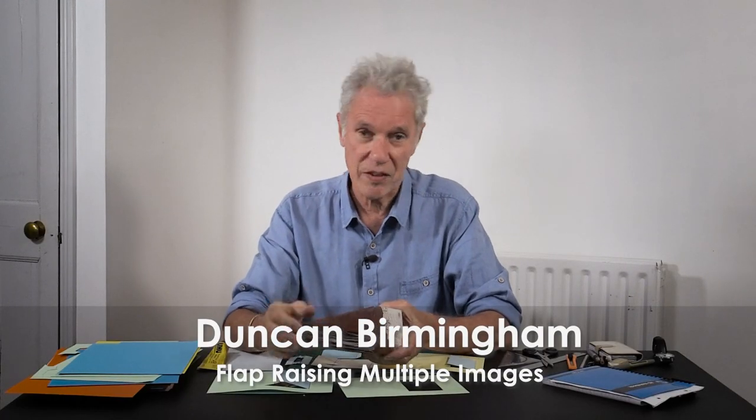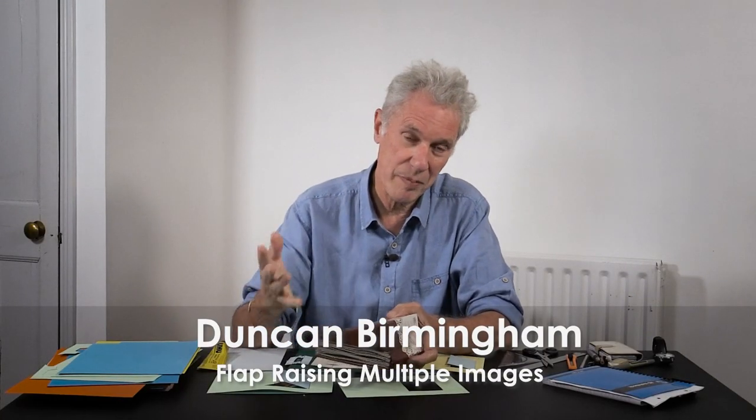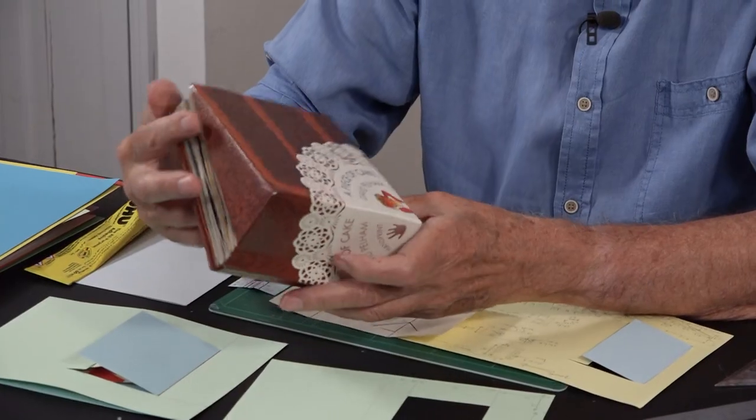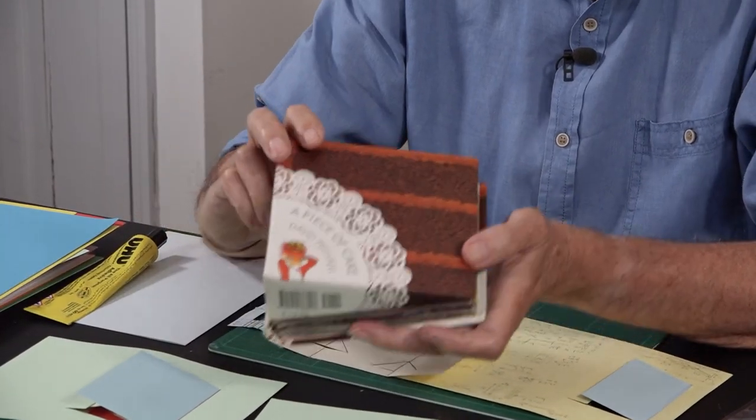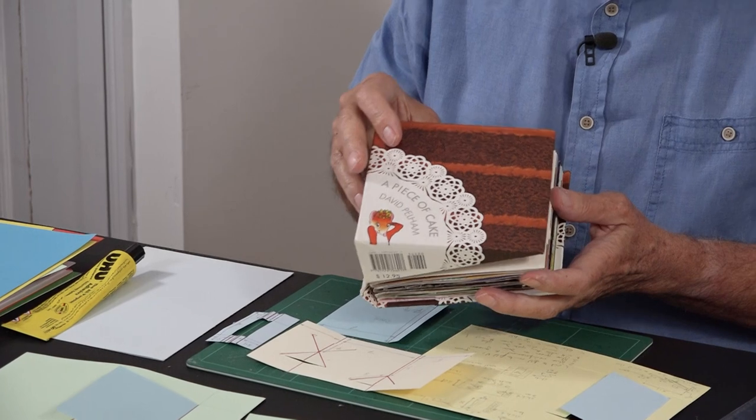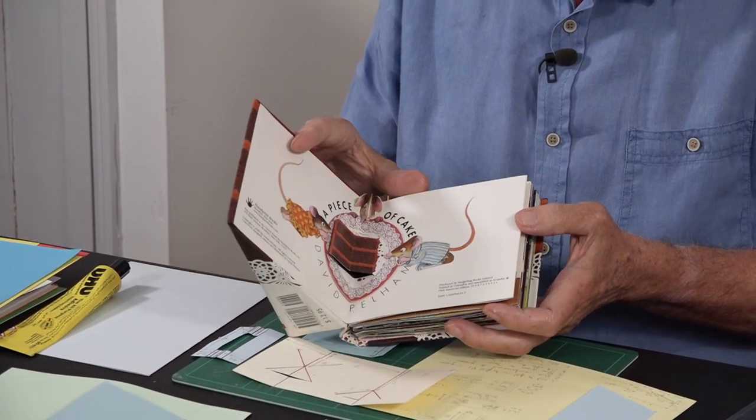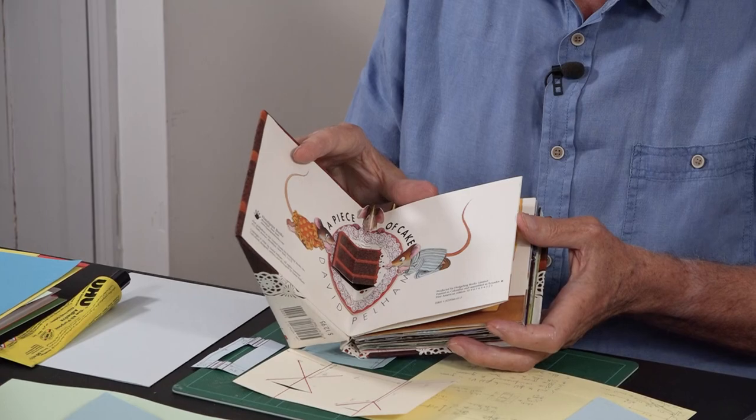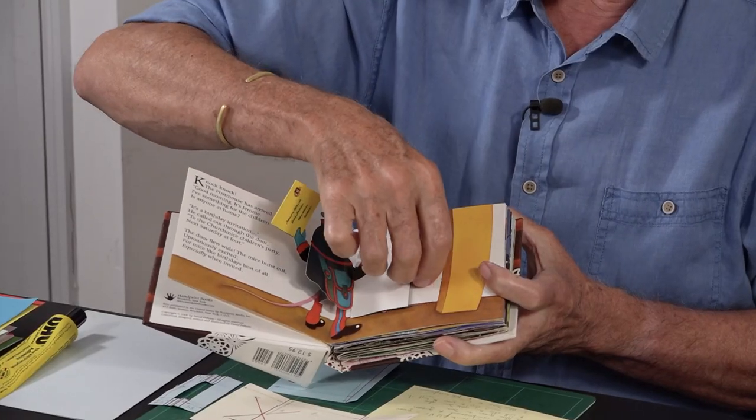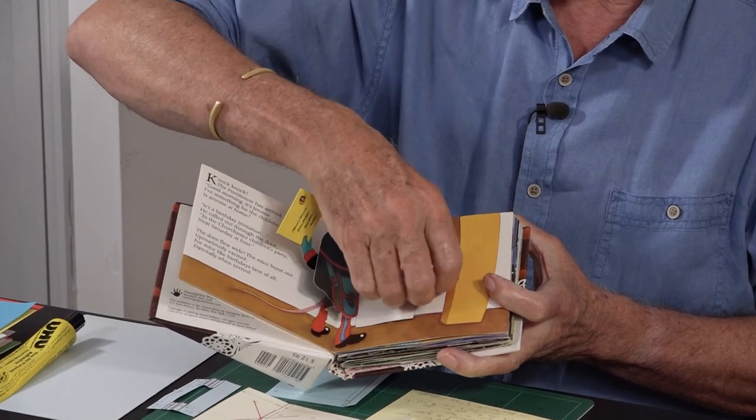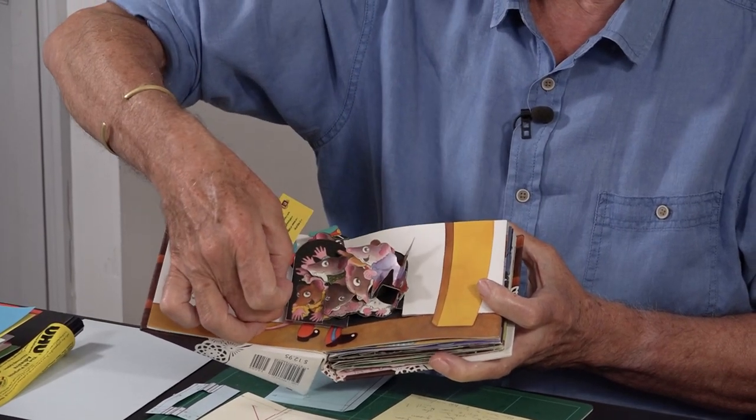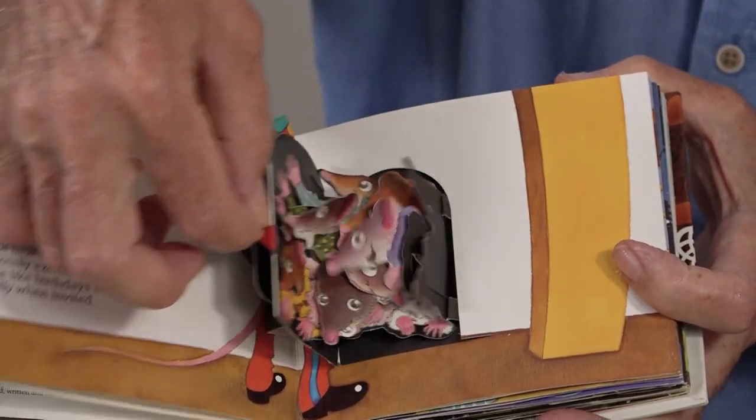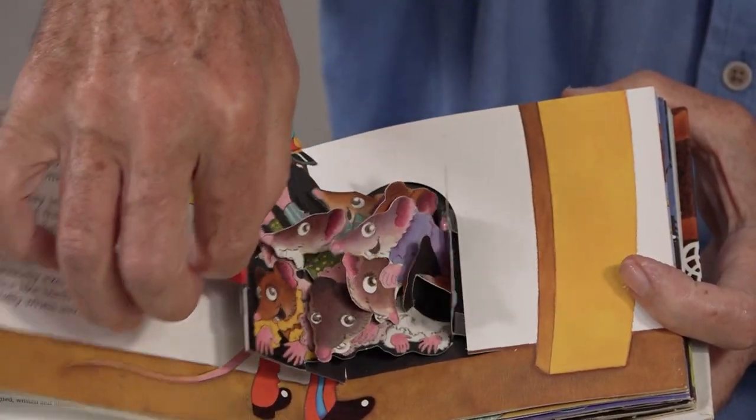This tutorial is about how to make multiple images appear when you pull a tab or open a flap. This comes from David Pelham's marvelous book 'A Piece of Cake,' which has amazing illustration and lovely paper engineering. On his very first spread, the postman delivers a letter to the mice, and when you open the door, multiple mice appear.